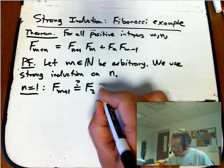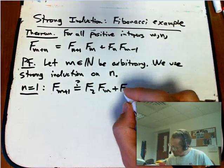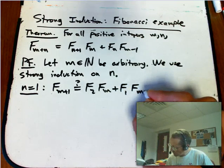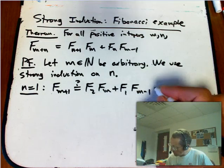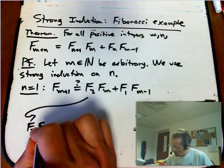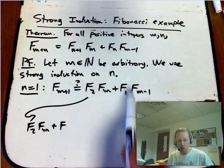When n equals 1, that's f sub 2 times f sub m plus f sub 1 times f sub m minus 1. Oh yeah, that's totally true. Is that true? Yeah, absolutely. Because f sub 2, f sub m. So note what I'm going to do here.